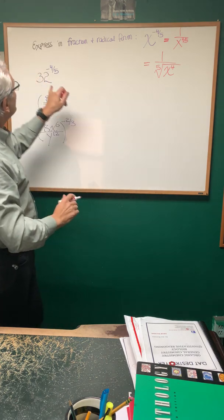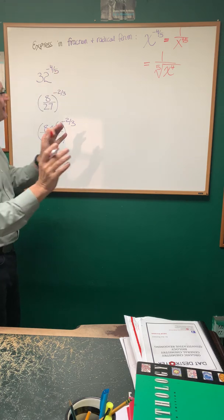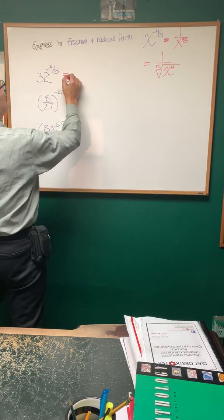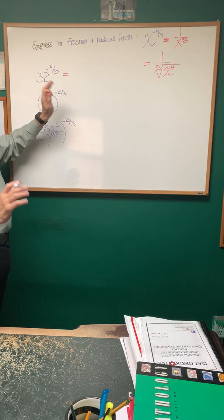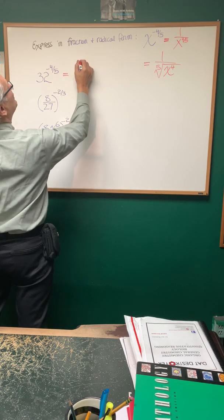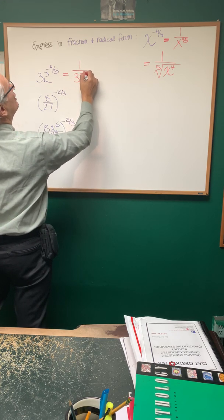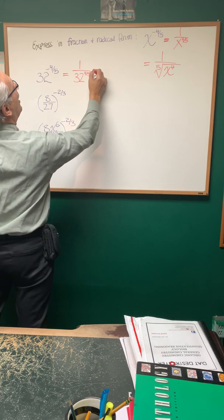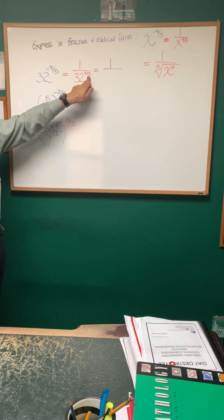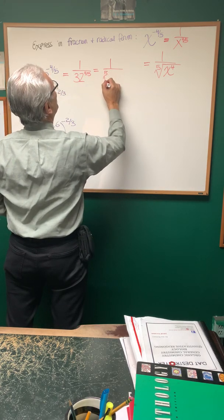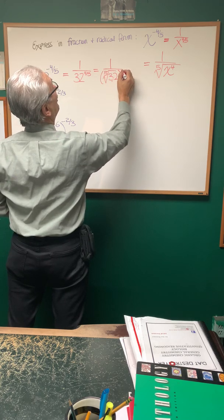Let's apply this to an actual number: 32 to the negative four-fifths power. We're going to do the same thing — follow the orders. There are three instructions in here, and we're going to take them one at a time, starting with the negative sign. The negative sign says take the reciprocal, so it's one over 32 to the four-fifths power. Next step, we're going to take the root — the fifth root of 32 — and that is going to be taken to the fourth power.